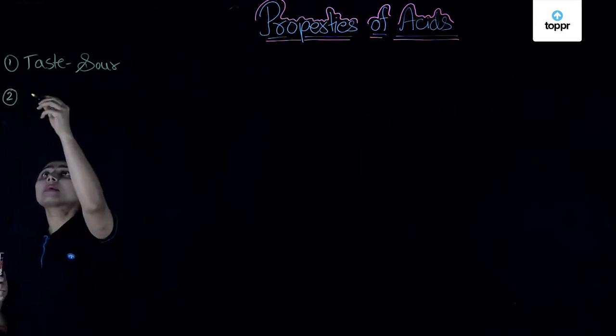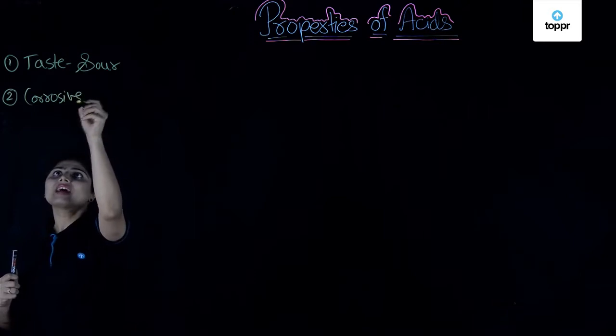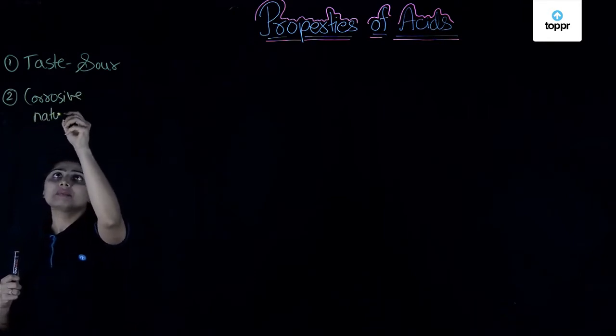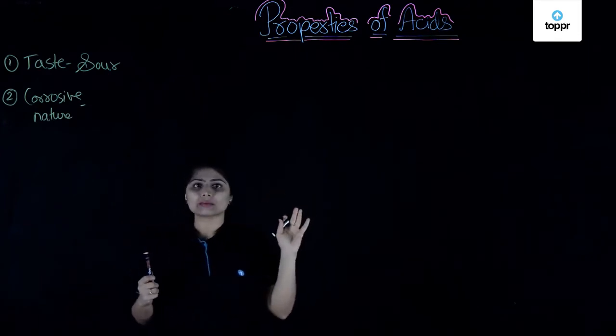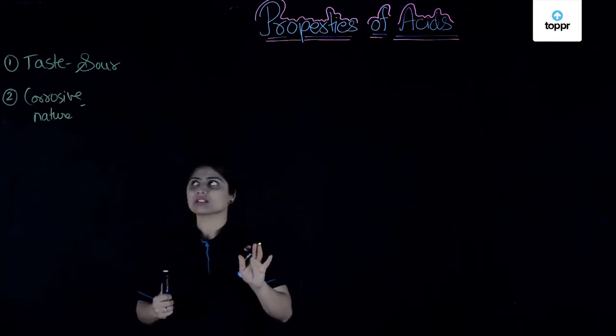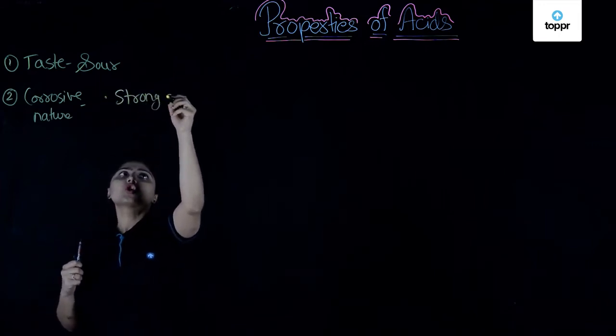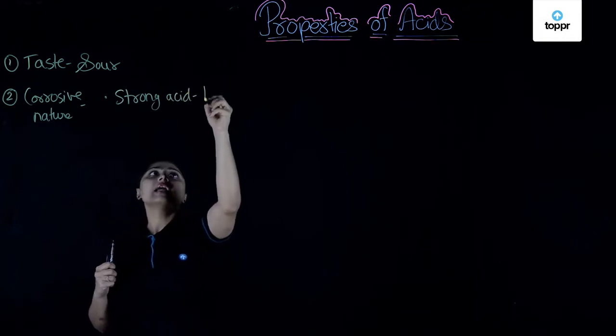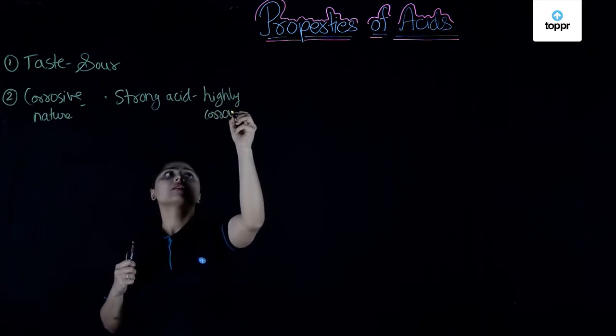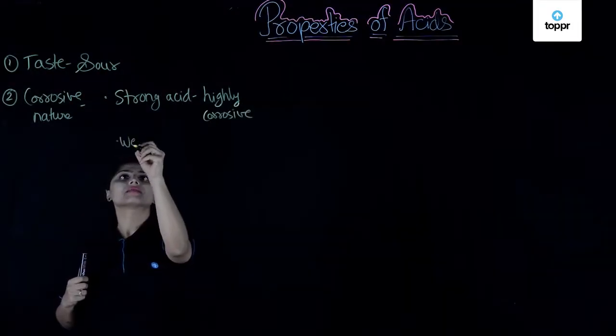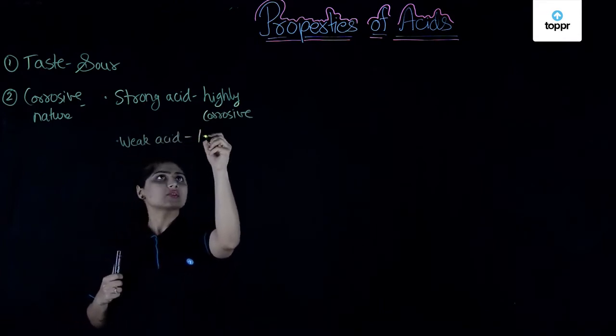The second property that we need to know is about its corrosive nature. Acids are corrosive in nature. That means if we have hydrochloric acid, it falls on something, it will corrode that substance. It will damage that substance. So, if it is a strong acid, strong acid will be highly corrosive and if we have a weak acid, weak acids are less corrosive.